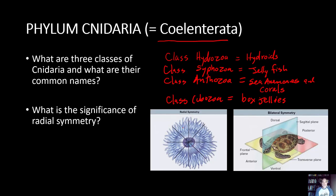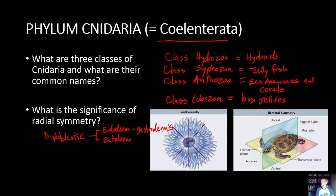Cnidarians developed from two embryonic tissues early in development, which is referred to as diploblastic. Humans and other higher animals develop from three germ layers, making them triploblastic. These germ layers include the ectoderm on the outside and the endoderm, sometimes referred to as the gastrodermis, because it lines the inside wall of their digestive cavity.